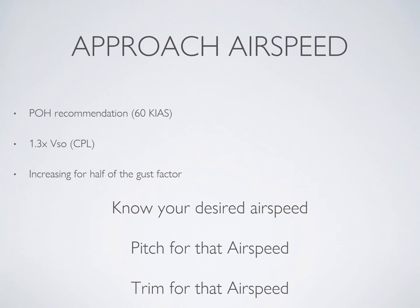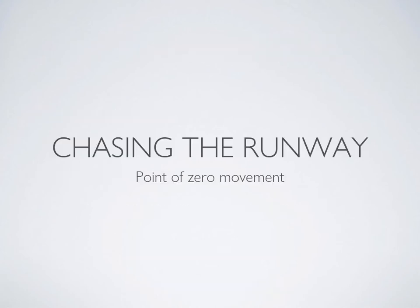The bottom line is: know what your desired airspeed is supposed to be, pitch for that airspeed visually, and trim to relieve control pressure. Now I'm going to talk about a phenomenon I call chasing the runway, and at the same time I'll bring up the point of zero movement. The point of zero movement is where you pick a spot way off in the distance and fly towards it — everything around that object appears to move away from it, yet that spot appears to remain in the same space.